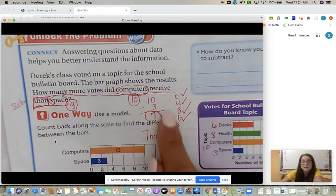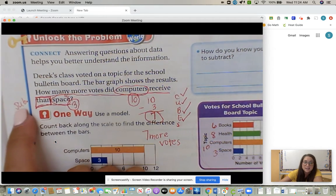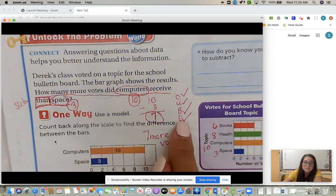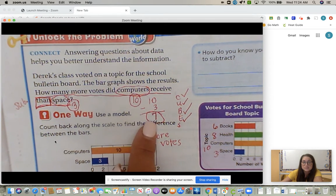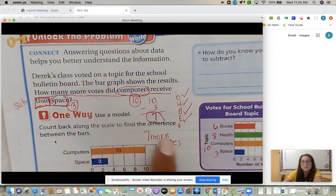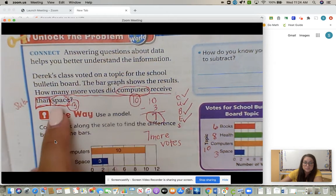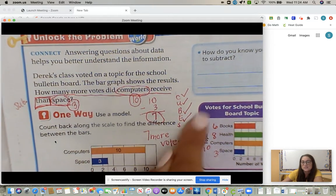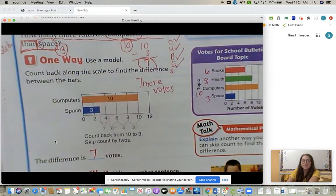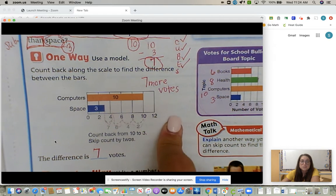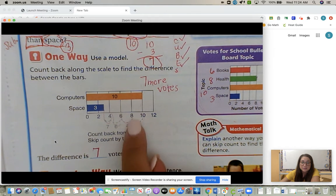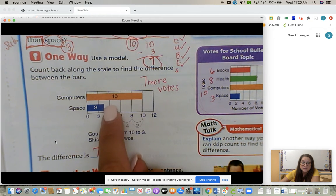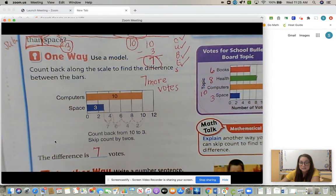We box our math verbs. You have than. Than means subtract. Now we need to evaluate and create a math problem. So we are going to subtract these two. Ten subtract three is seven. Seven more votes. There are seven more people who voted for computers than space. Another way you could do it: start at the greatest number. We know our scale is two. So we can skip count by twos until we get to space. Two, four, six, and now we only add one. Seven. That gives us seven votes.